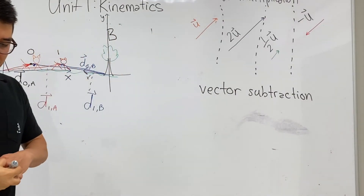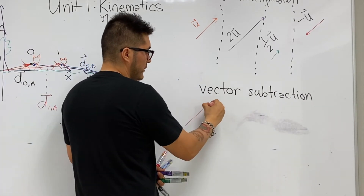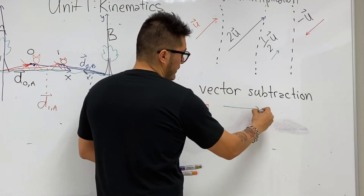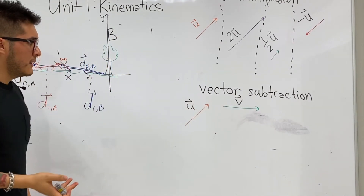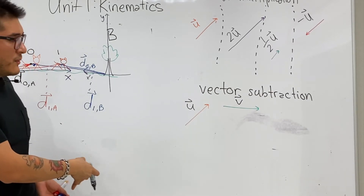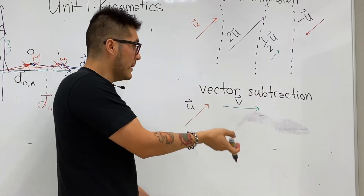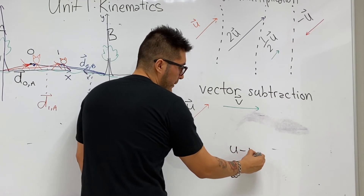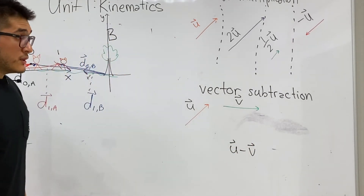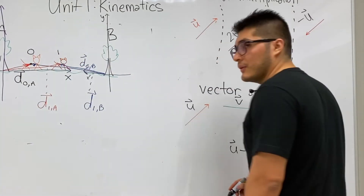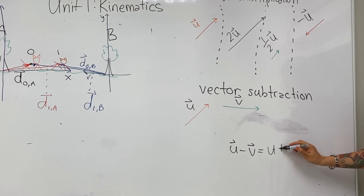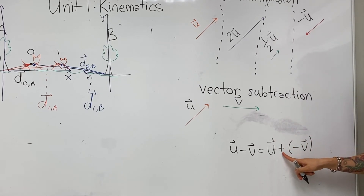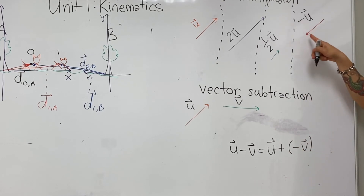Let's do vector subtraction. Start with two vectors: vector u and vector v. Let's say we want to find u minus v. The trick we're going to use is to rethink this equation as a sum. So u minus v becomes u plus negative v. We can use our head-to-tail method from addition, and our negative, which just means going in the opposite direction.